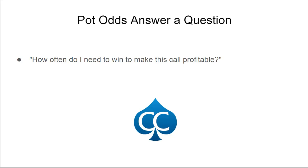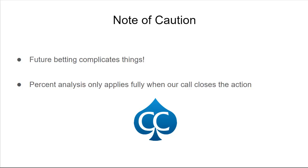You're going to want to go back into the Day 5 section of the book — the table that Katie and I put in there answers this question. It'll give you a percent that you need to be correct based on the Pot Odds you're getting. One really important note: future betting complicates things. This is going to only answer the question if we're facing a bet at the river, or if our opponent has shoved so that we're closing the action. When that's not the case, Pot Odds are still useful and important to calculate. We're going to build on this idea when we get to implied odds in a future section.